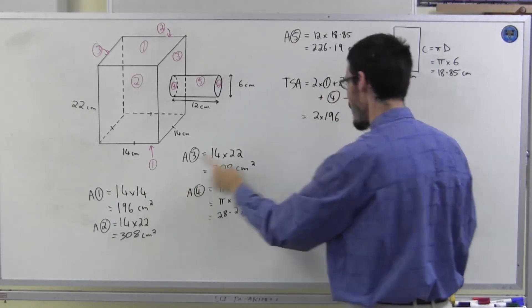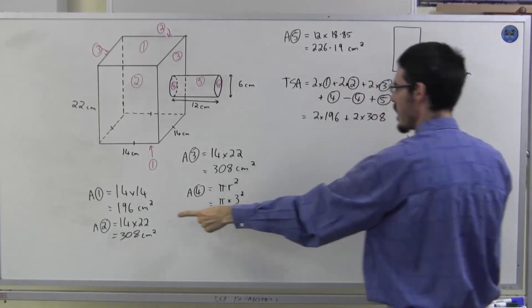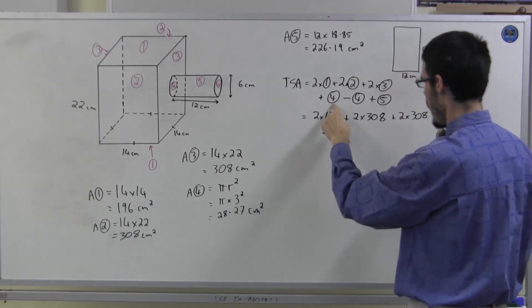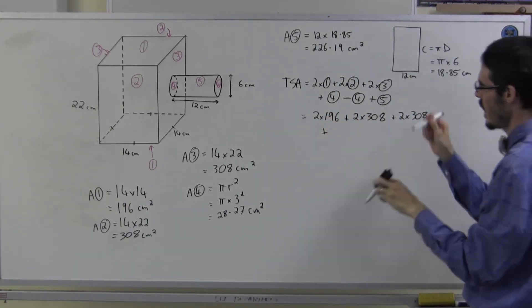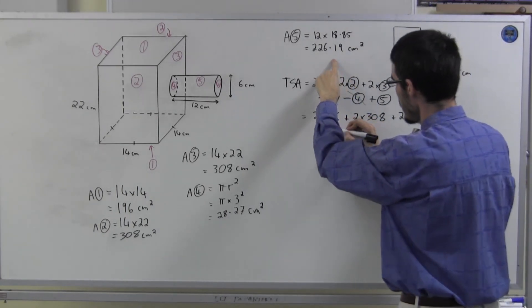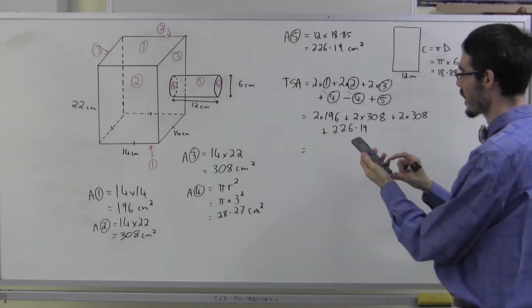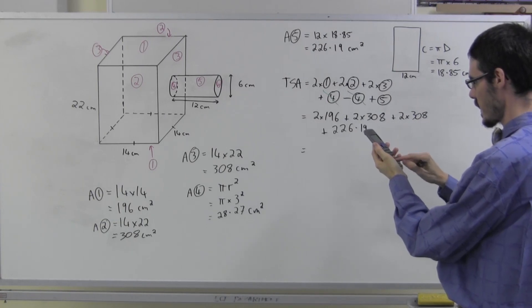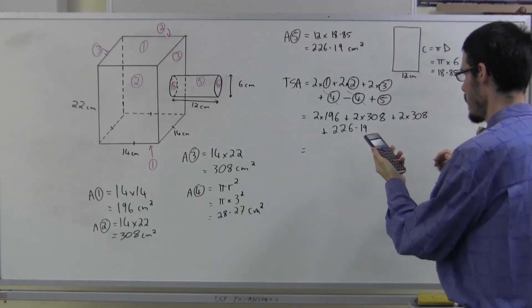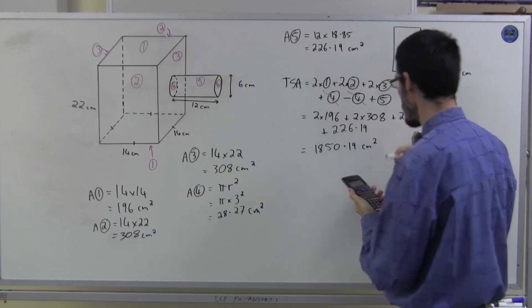2 lots of 196. Because it's complicated, I'm going to write it out. 2 lots of 196. 2 lots of 308. 2 lots of 308. I'm going plus 4 and then subtracting it again, so I actually don't want it at all. Plus number 5, 226.19, which I'm going to ask my calculator. Add on. Add on. 2 times 196. 2 times. 2 times. 1,850.19 square centimeters.